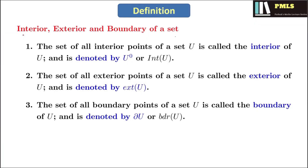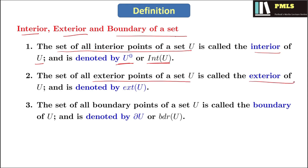A set can have many interior points, many exterior points, and many boundary points. Based on that, we have the notions of the interior, exterior, and boundary of a set. The set of all interior points of U is called the interior of U, denoted int(U). The set of all exterior points of U is called the exterior of U, denoted ext(U). The set of all boundary points of U is called the boundary of U, denoted ∂U or Bdr(U).